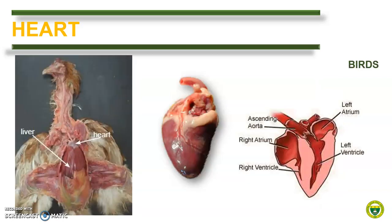For birds, the heart is also four-chambered like in mammals. It is conical with the apex formed solely by the left ventricle, same as in other domestic animals. The dorsal and lateral aspects of the heart lie in contact with the liver, while the other surfaces are surrounded by the respiratory elements and the air sacs. The right atrium receives the caudal vena cava and a pair of cranial vena cava. The left atrium receives oxygenated blood via a single common pulmonary vein. The ventricles are similar to those of mammalian hearts.